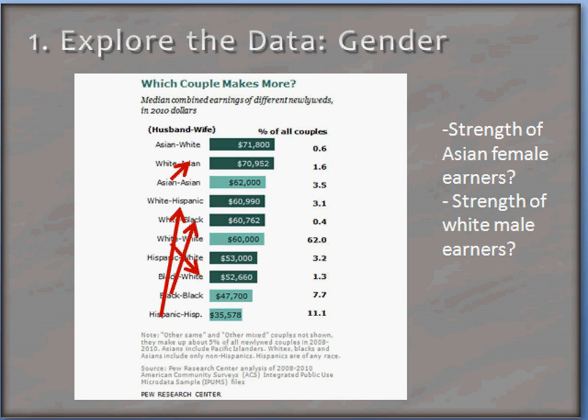Typically, when a female married a member of a different race, there was in general an increase in the median income of the couple. So a Hispanic female jumping from a Hispanic-Hispanic couple to a white-Hispanic couple goes from a lower to a higher median income, from about $36,000 to $60,000. The same is true for black females — from a black-black couple to a white-black couple, the median income is higher. So the data shown may not just be a factor of race, but perhaps the strength of particular earners.